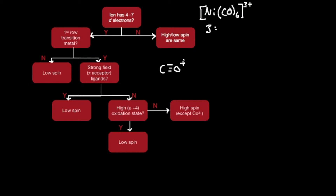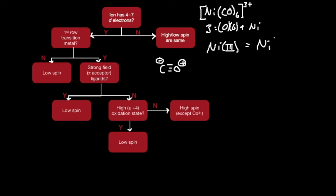Carbon monoxide has a plus charge on the oxygen and a negative charge on the carbon, so overall it is neutral — this is zero. There are six of them, and then I add the charge of the nickel. So clearly this is nickel 3+. That is step 1.